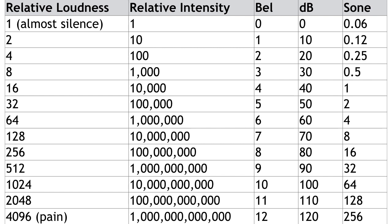Now, decibels are a logarithmic scale. Each time the loudness of the noise doubles, you add 10 decibels. This means that 20 decibels is twice as loud as 10 decibels, and 90 decibels is twice as loud as 80 decibels. Now, the problem with decibels is that it's an indirect measure of volume and a logarithmic scale, which makes it a bit difficult to use.